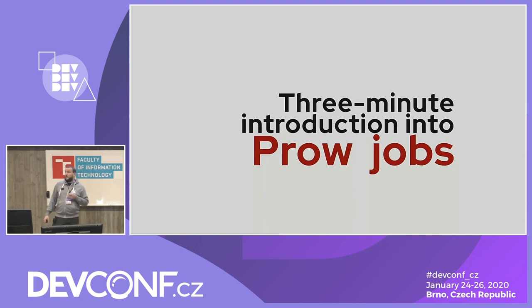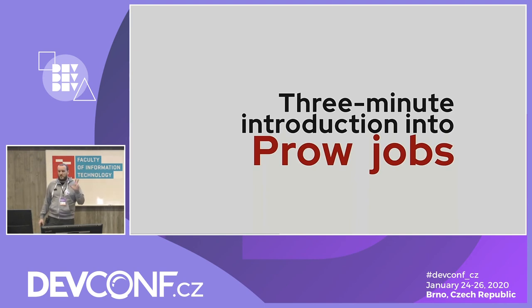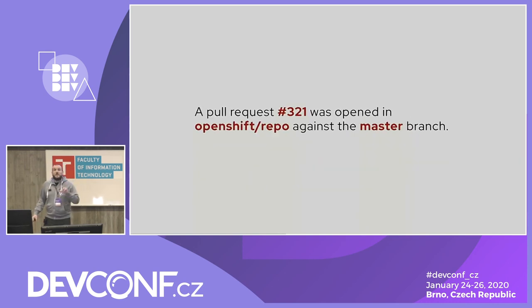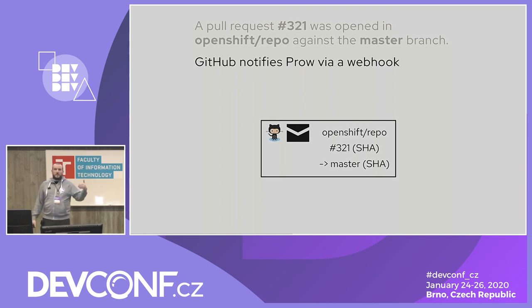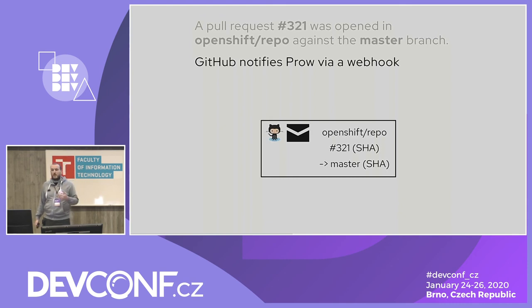To explain how this actually works, you need to understand at least a little bit how Prow works internally, and I'm not going to spend more than three minutes on it. So let's start with the event that's interesting for us: a PR is opened on some repository. The first thing that happens is that GitHub notifies Prow that the event occurred, providing all the details about what was opened, where, and what the hashes of the commits involved are.